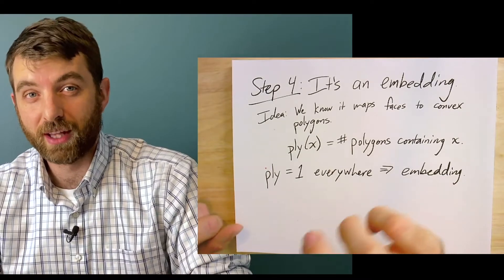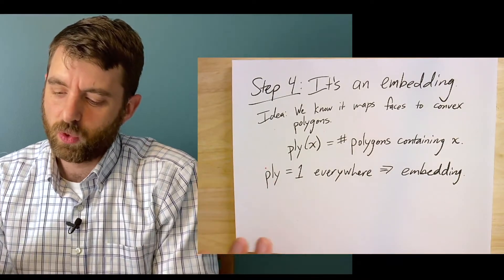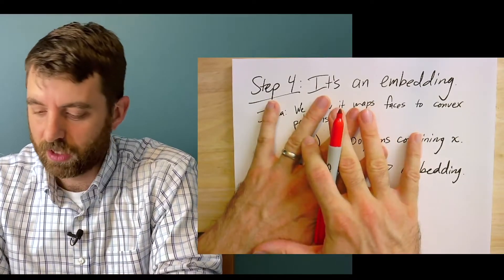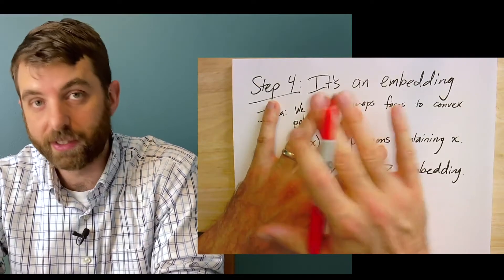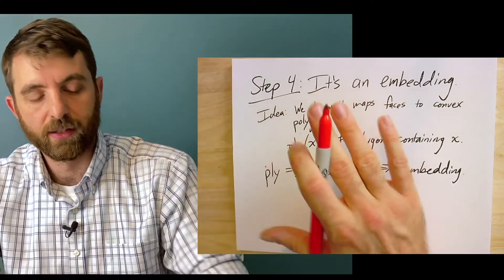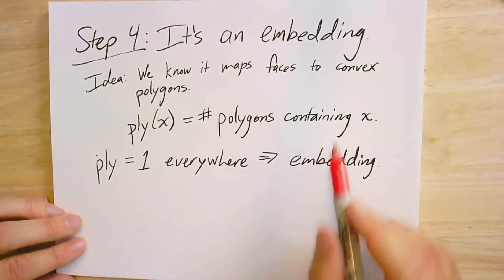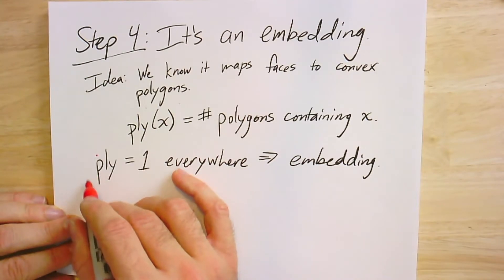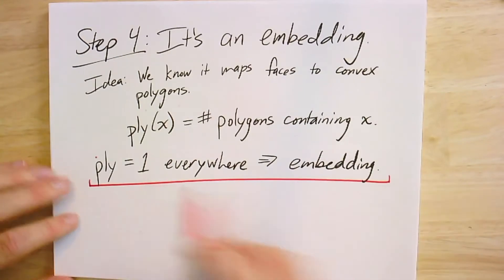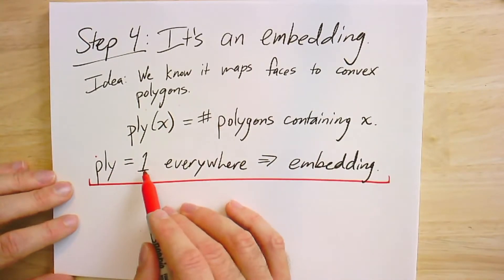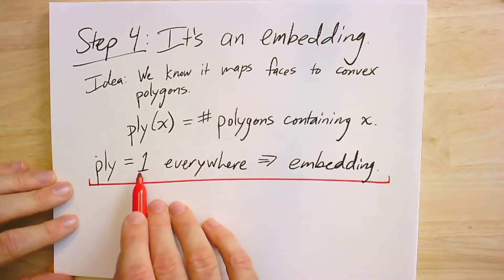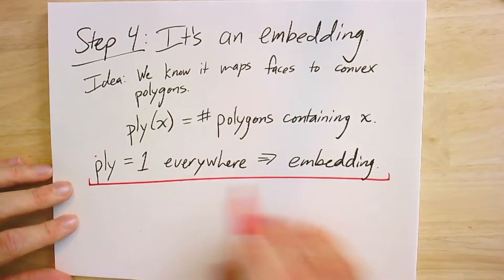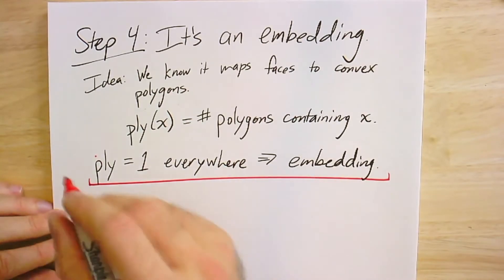We're going to use something called the ply. When you have the drawing with convex polygons in the plane, you can ask for any point: how many polygons is that point inside? We want to check that the ply should be one everywhere - every point in the plane is in just one polygon or on an edge. That's going to imply it's an embedding.